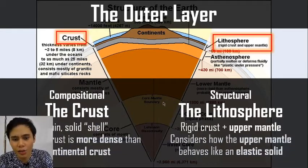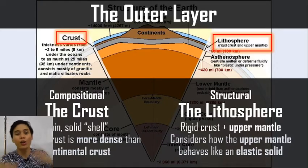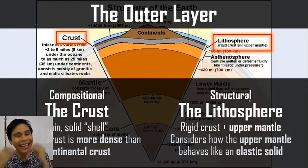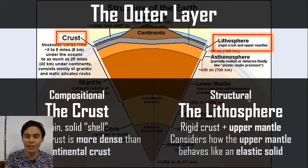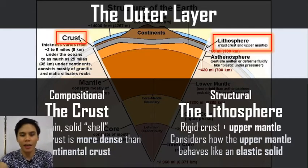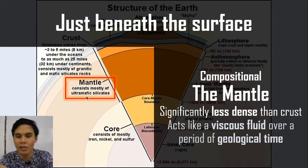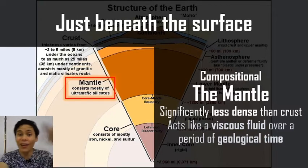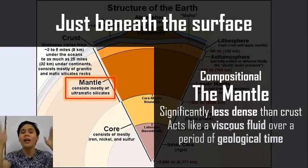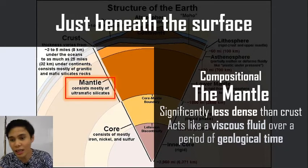If we describe it in structural form, we have the lithosphere — the rigid outer layer — which is the rigid crust plus the upper mantle that functions like an elastic solid, making it more rigid than the lower mantle. Just beneath the surface in the compositional description we have the mantle, which consists of ultramafic silicates. The mantle acts sort of like a viscous fluid over a period of geological time. The more specific physical characteristics are described in the structural layers.